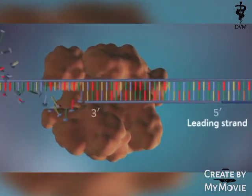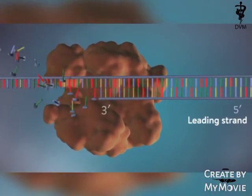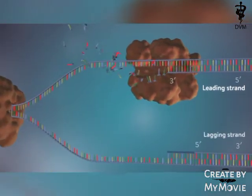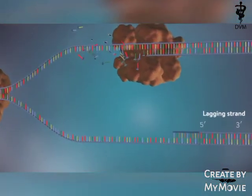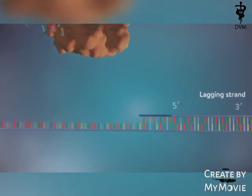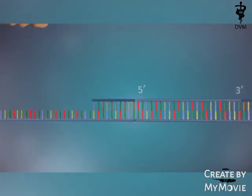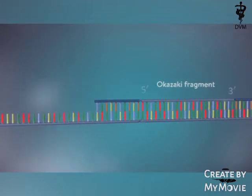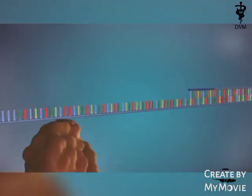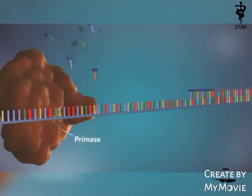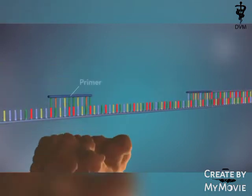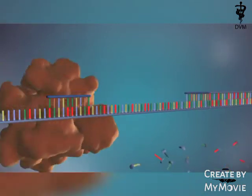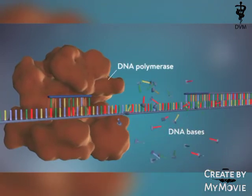The newly formed leading strand is made continuously. The other strand, called the lagging strand, cannot be made in a continuous way because it runs in the opposite direction. Instead, this strand is made in a series of small chunks called Okazaki fragments. Each fragment starts with an RNA primer, and DNA polymerase adds a short row of DNA bases in the 5' to 3' direction.